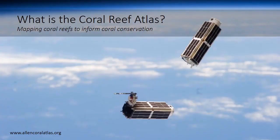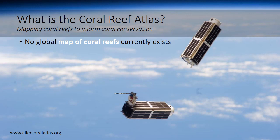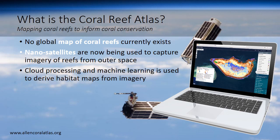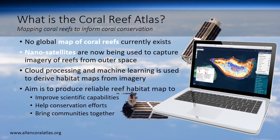So what is the Allen Coral Atlas? It's a mapping effort to map all the coral reefs in the world, because currently there is no map that provides the level of detail we aim to achieve. We are able to achieve that because we use new nanosatellites that capture satellite imagery for any reef in the world on a daily basis. Using these satellites, cloud processing, and machine learning, we are able to derive coral reef habitat maps. The aim of this project is to improve scientific capability, help conservation efforts, bring communities together, and help improve coral reef conservation.